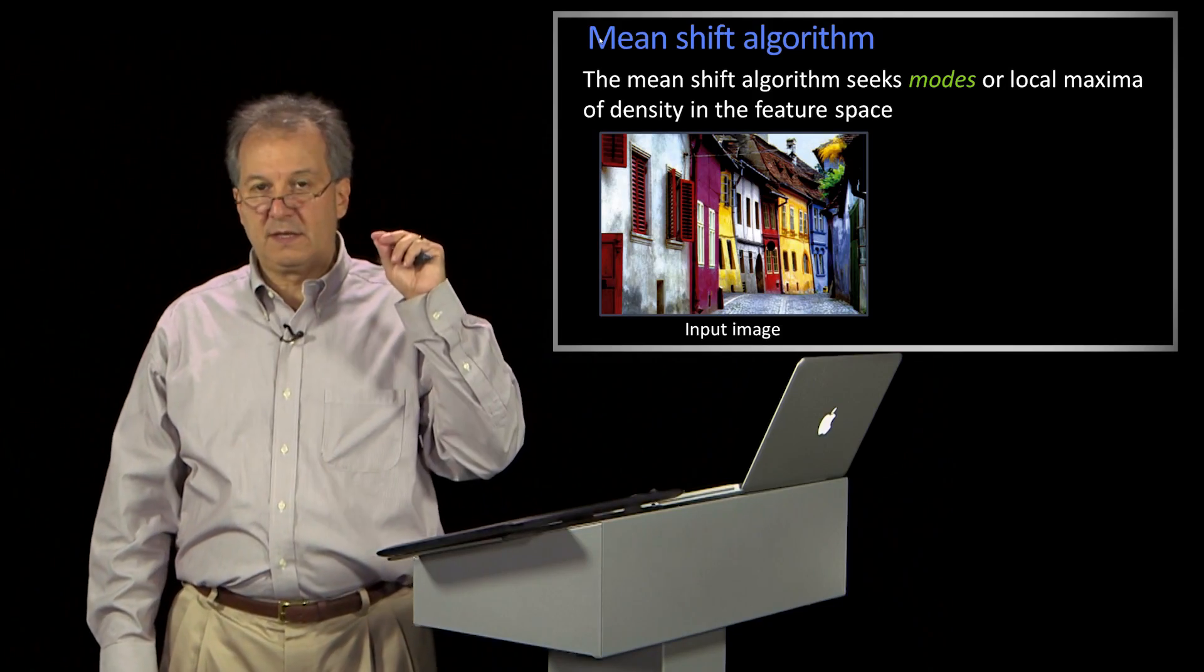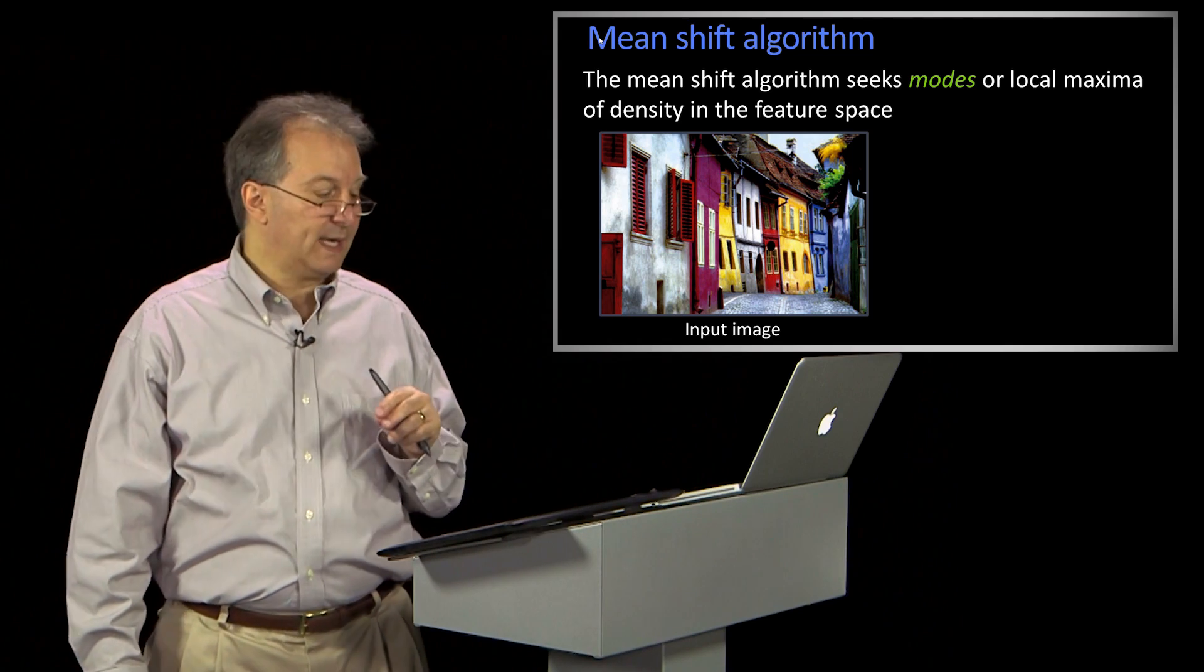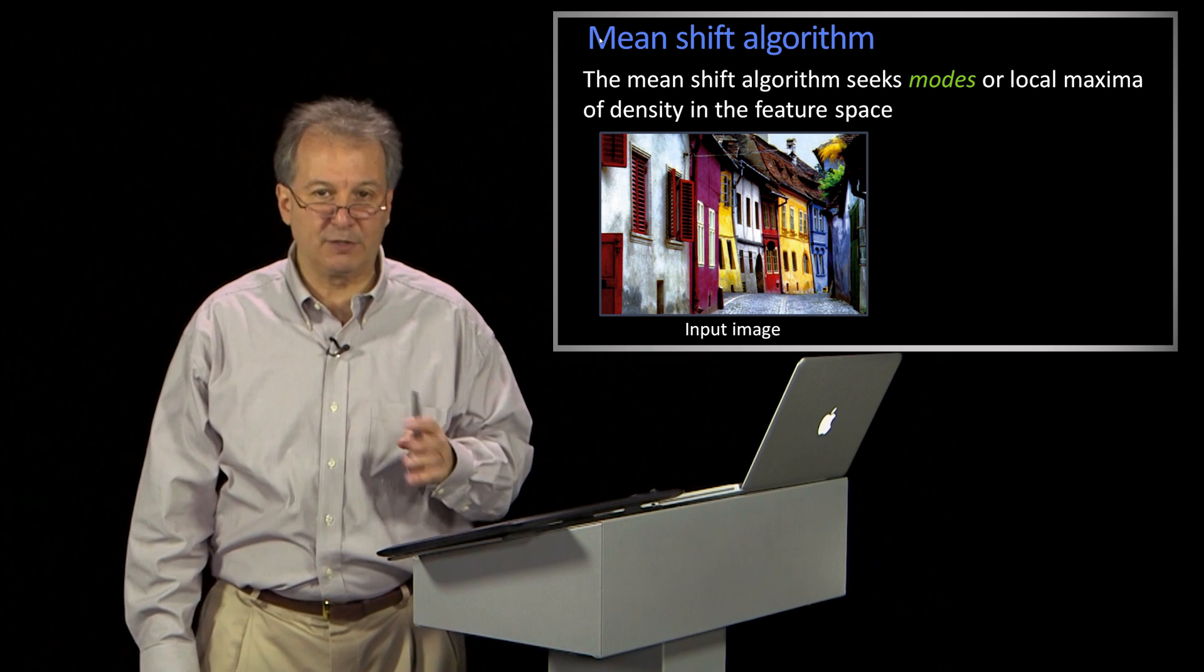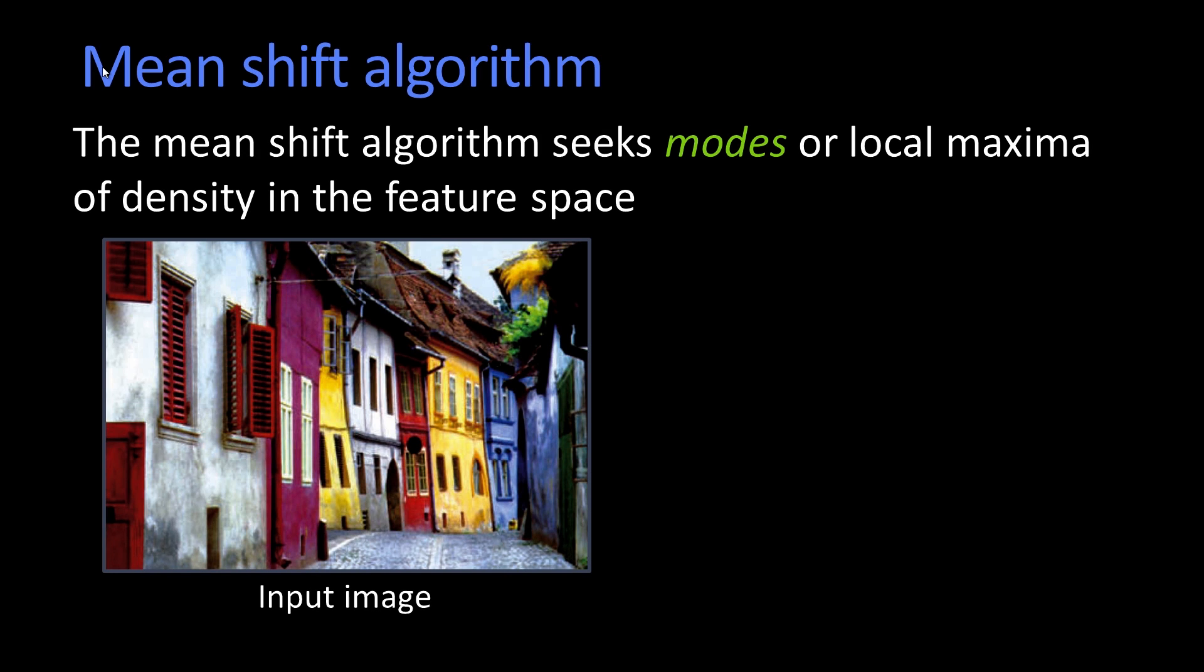If you could find the modes, you might be able to segment the image that way. The approach we're going to talk about for doing that is called the mean shift algorithm. We actually introduced this when we were talking about tracking. It's a little bit easier to talk about when we do it as clustering.